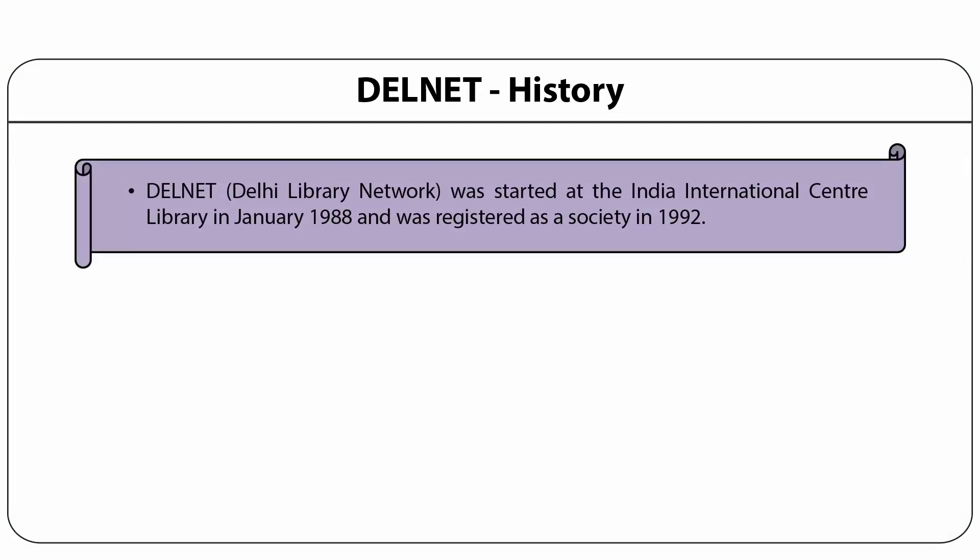With a change in development and implementation strategy, the participating institutions in a network were to arrange their own terminal hardware, software, manpower, and data conversion. DELNET, Delhi Library Network, which is now called Developing Library Network, was started at the India International Center Library in January 1988 and was registered as a society in 1992.